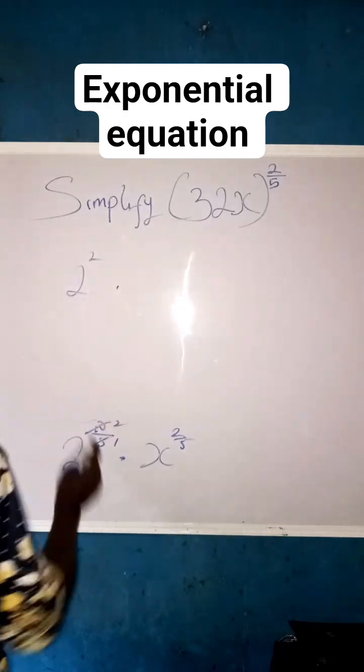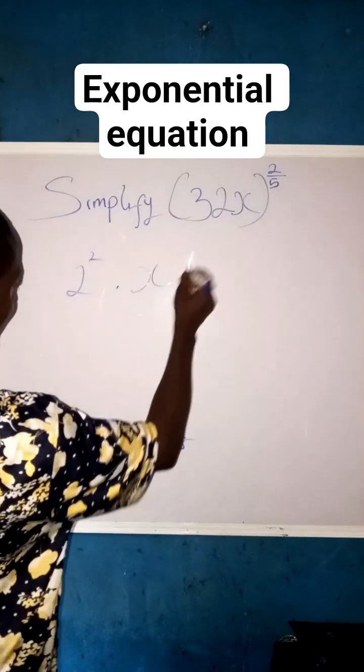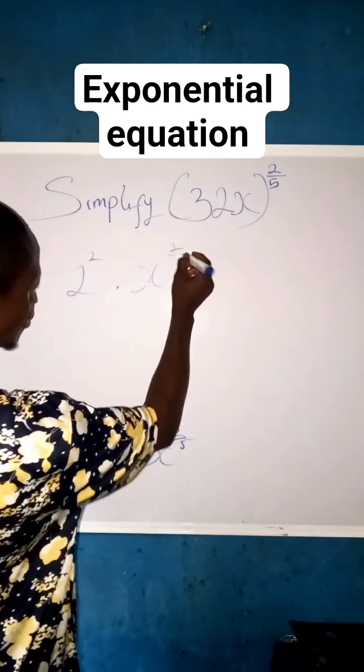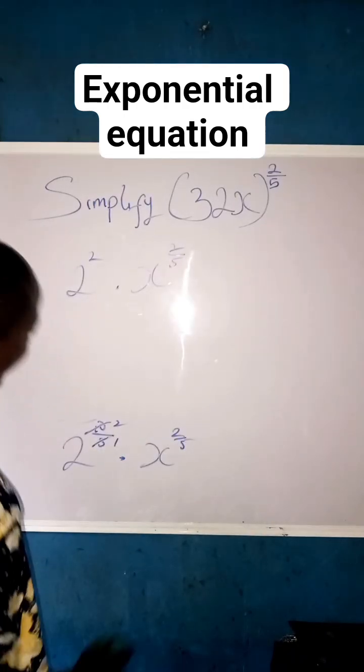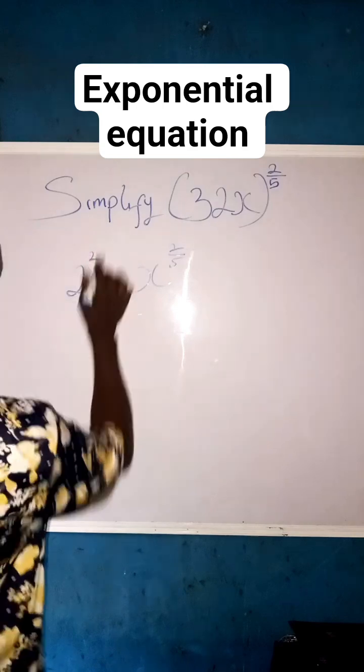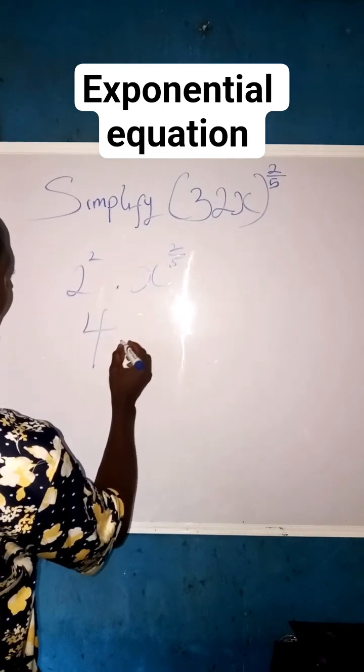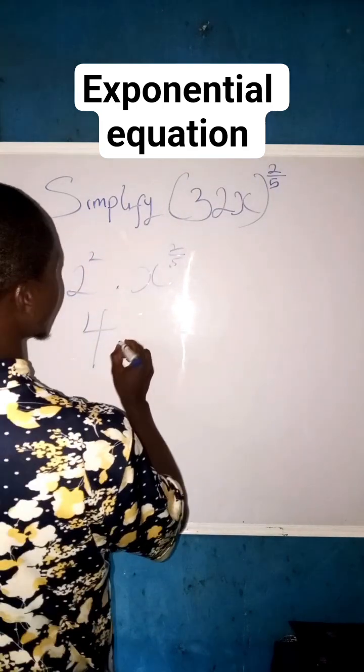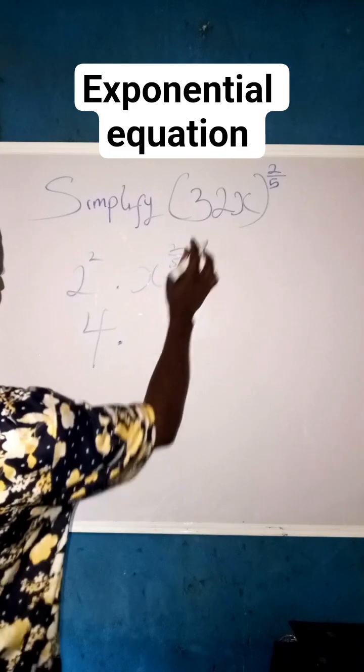Then times x raised to power 2 all over 5, right? Now, we say 2 raised to power 2 is 4, 4 times x raised to power 2 all over 5.